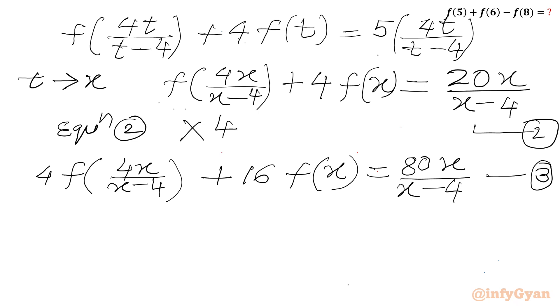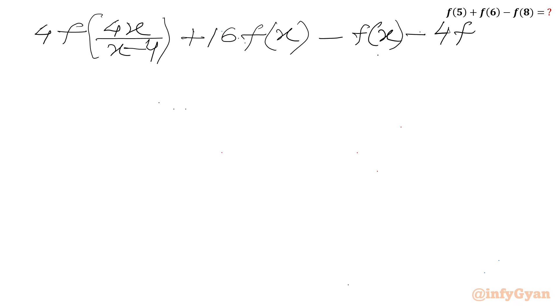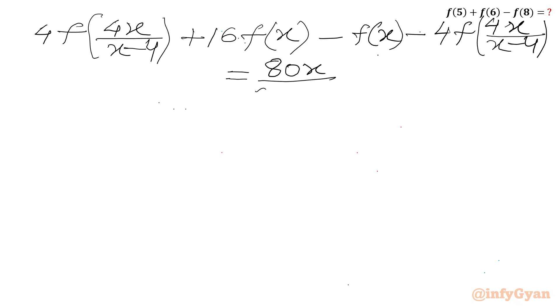Now I will subtract equation 1 from equation 3. Writing out equation 3 minus equation 1: [4·f(4x/(x−4)) + 16·f(x)] − [f(x) + 4·f(4x/(x−4))] = 80x/(x−4) − 5x. We can cancel the f(4x/(x−4)) terms, and 16·f(x) − f(x) gives 15·f(x).